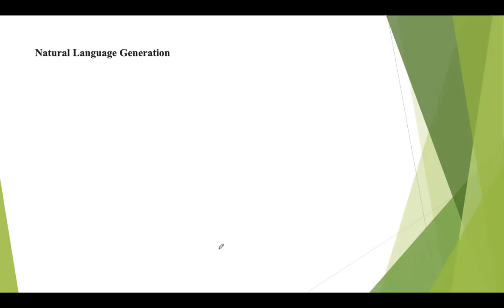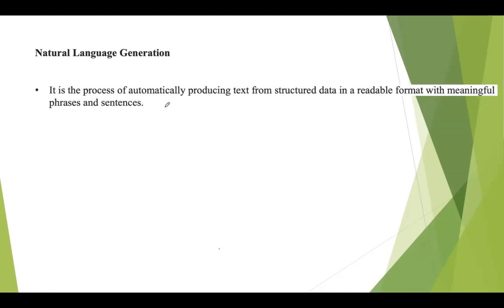Natural language generation, or NLG, can mine large quantities of numeric data, identify the patterns, and share the information in a way that is easy for humans to understand. NLG is defined as the process of automatically producing text from structured data, where this produced text should be in a readable format by providing meaningful phrases and sentences, in a way that is easy for humans to understand.